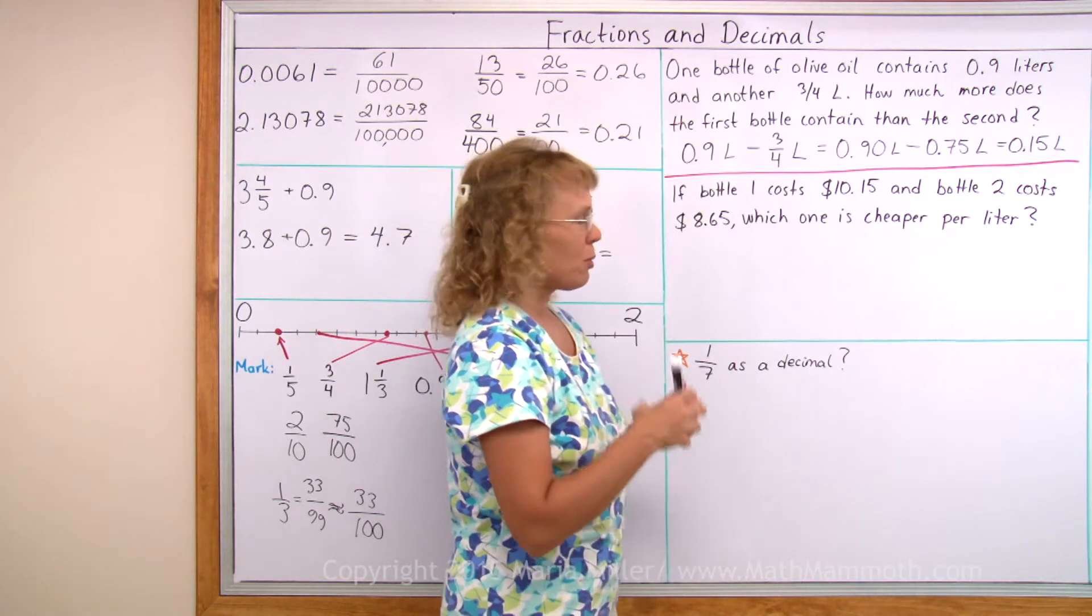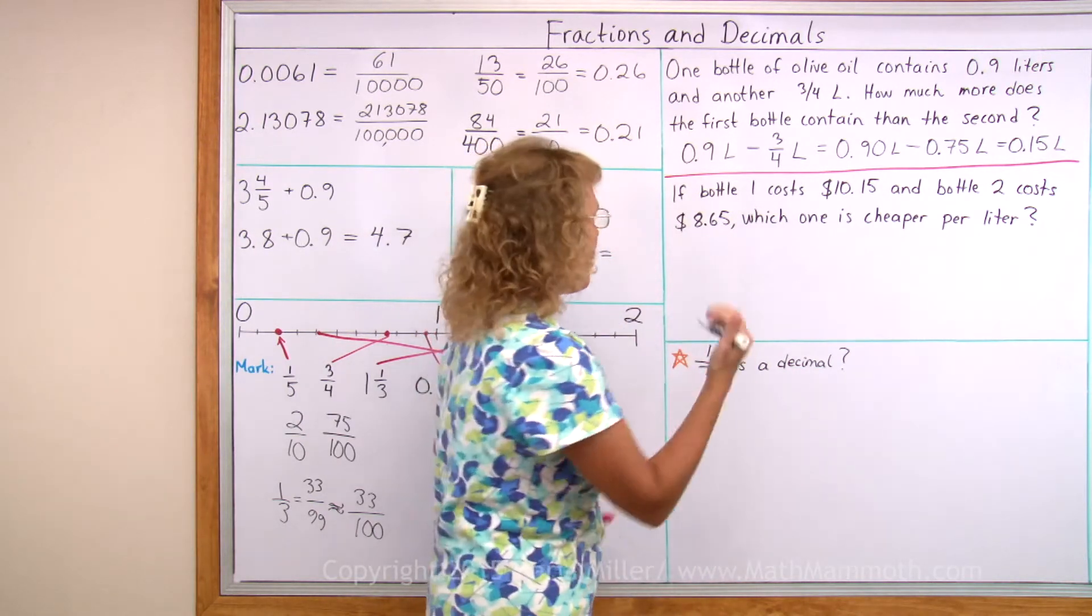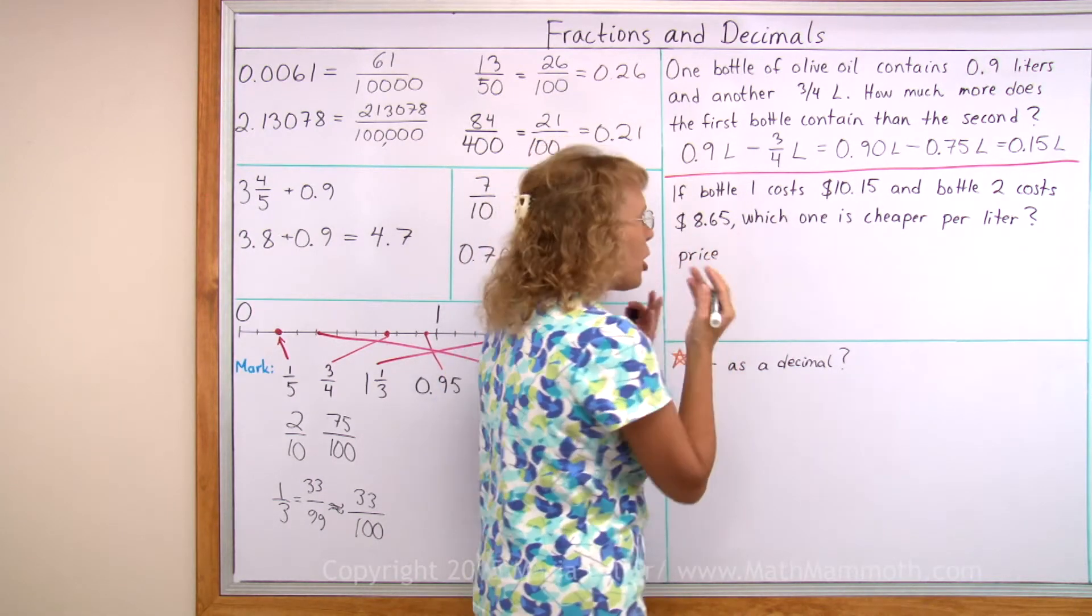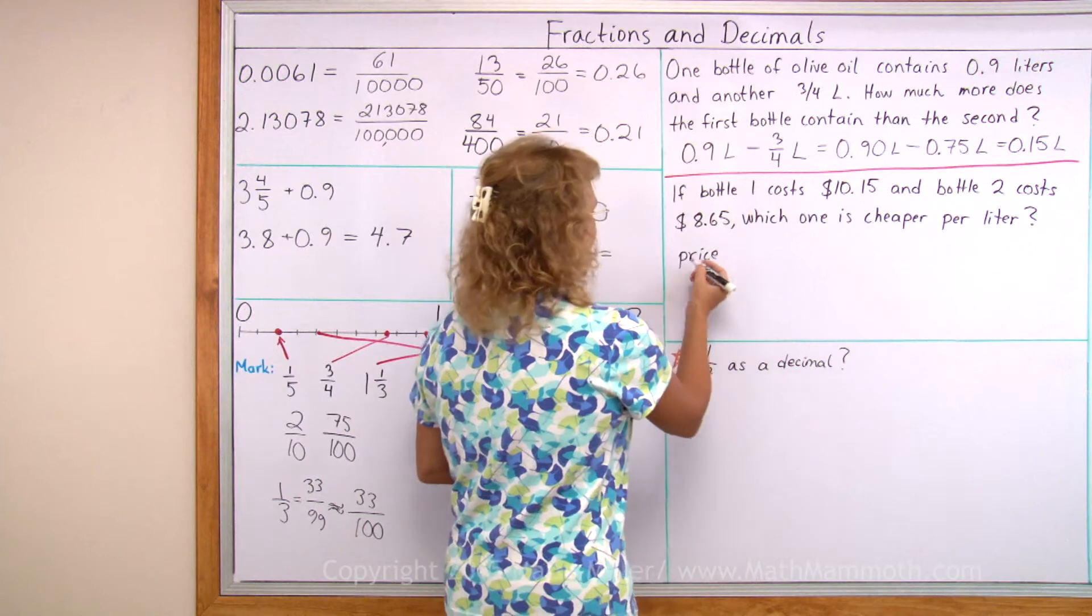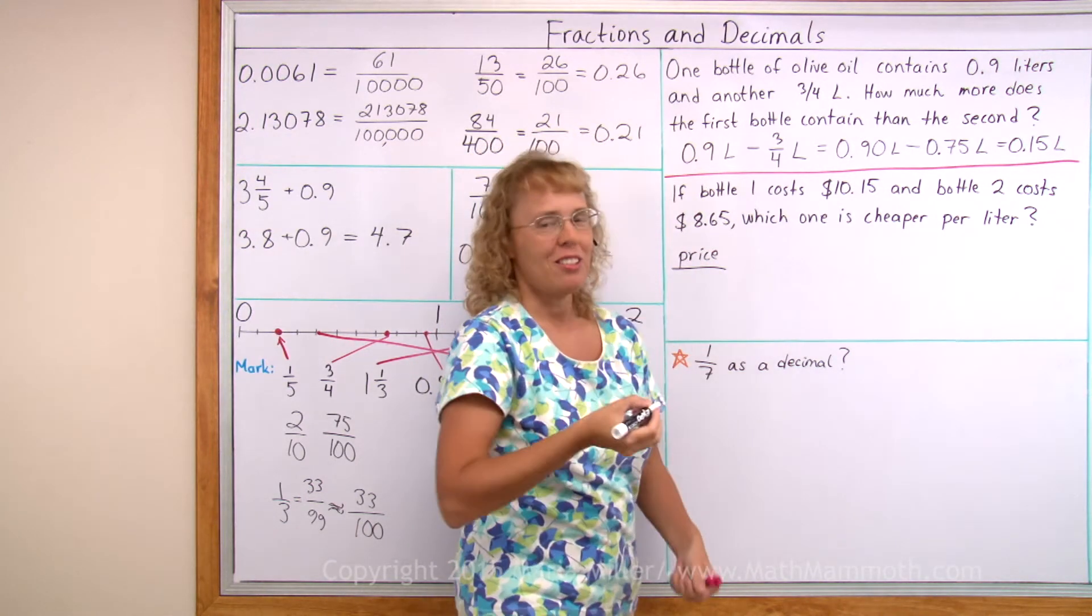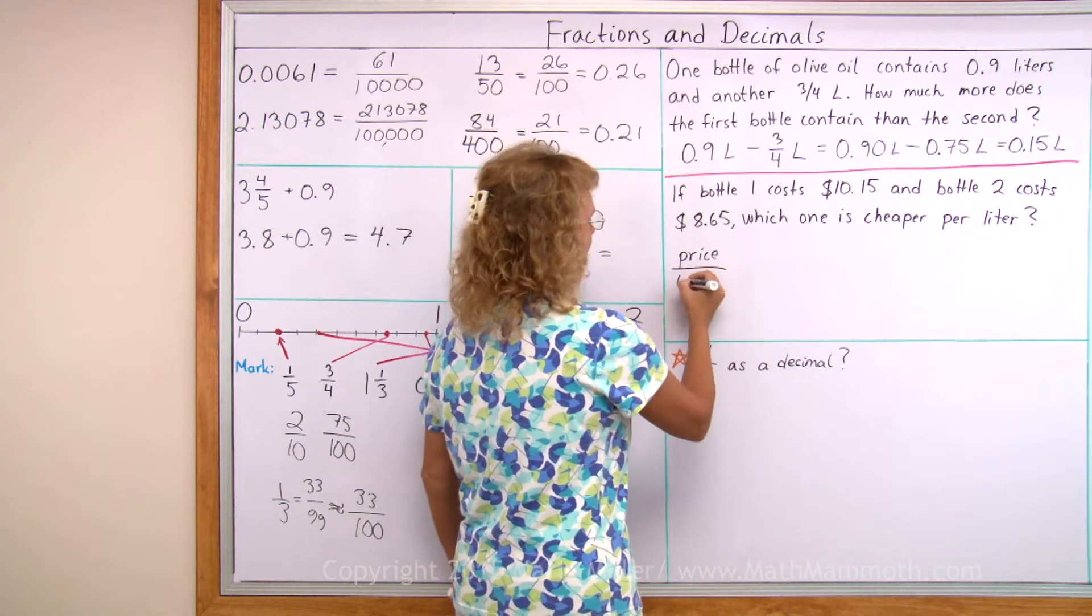We're going to calculate those prices per liter. If you think of price per liter, it means price divided by, because the per is the division, and then divided by the liters. However many liters there are.